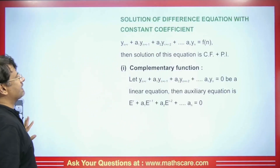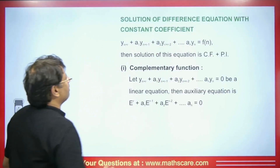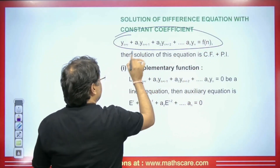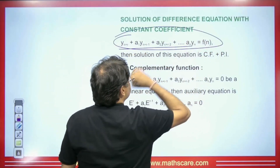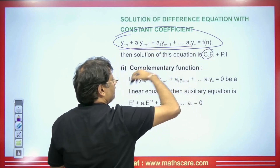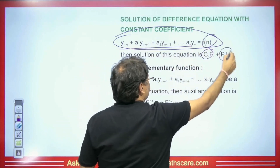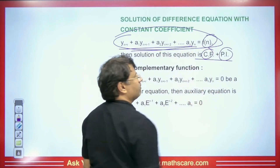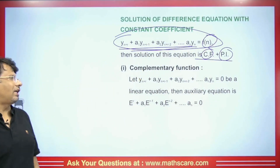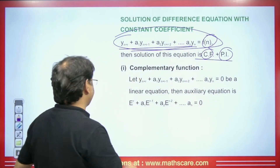How do we solve this problem? Whatever differential equation we have of this type, the answer on one side is the complementary function and on the other side is the particular integral. The total answer we get will be CF + PI, and we have studied CF + PI in differential equations.